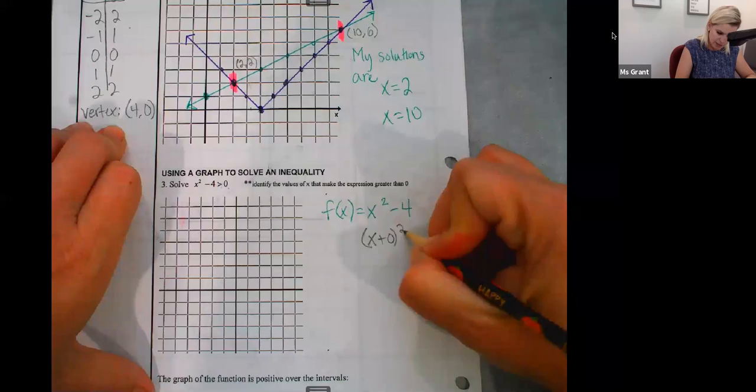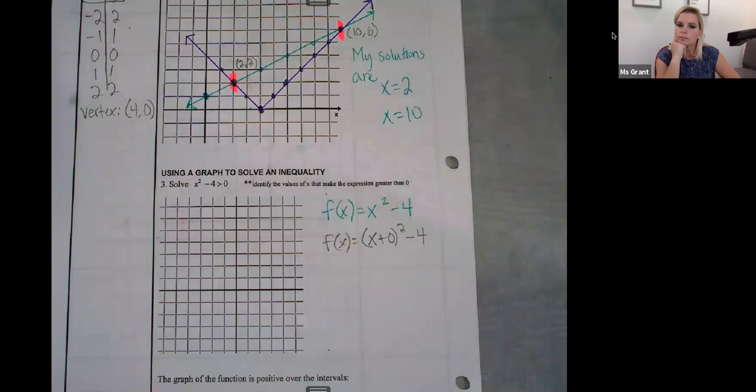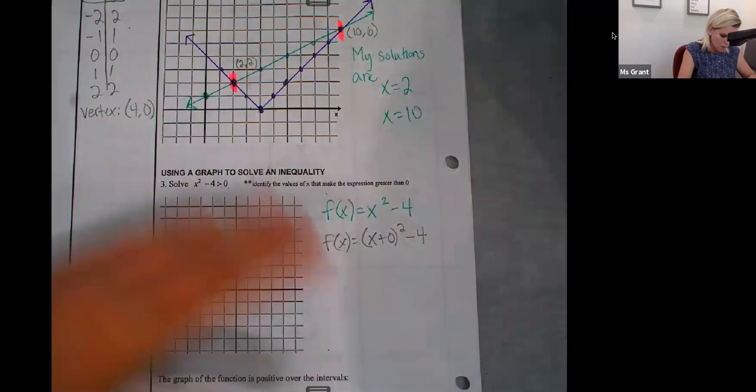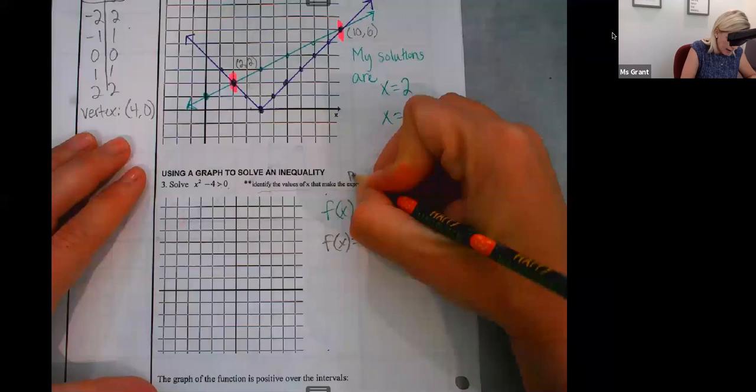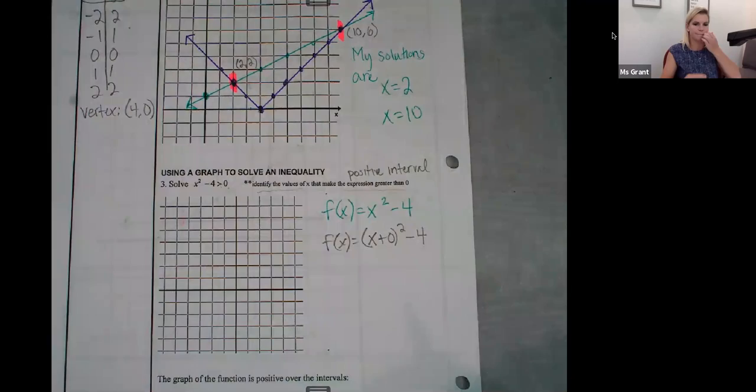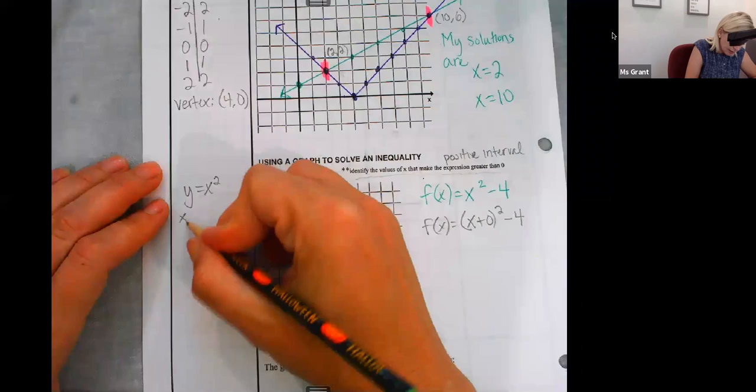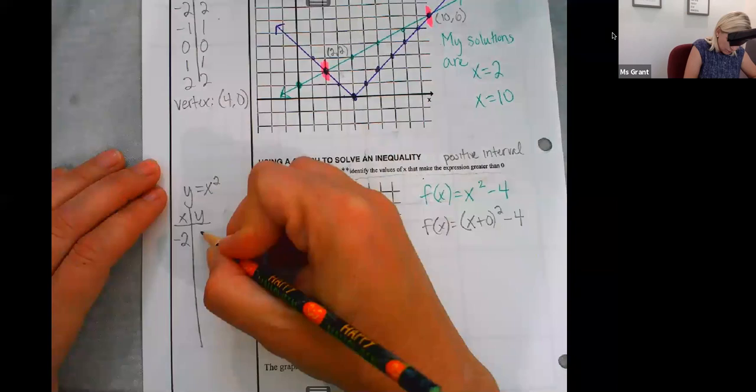And you do realize that if this were h-k form vertex form, it would look like that, right? Just want to make sure we're all clear. So this is a parabola, and I want to know what are the values of x that make the expression greater than zero. That means I want it to be a positive interval. In case you need it, hoping you really don't at this point, but the parent function of a parabola, you need to have this memorized by now, is this.